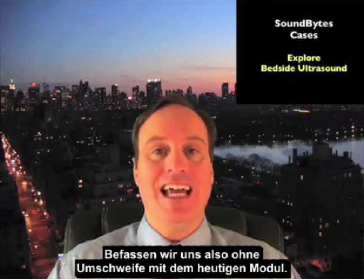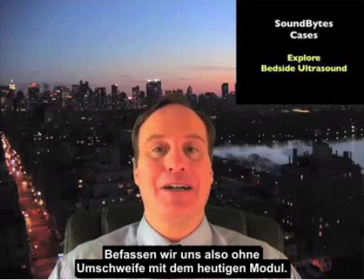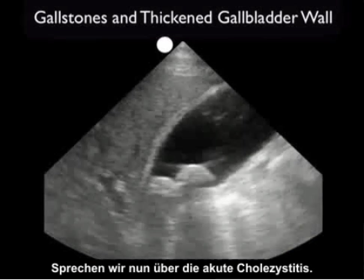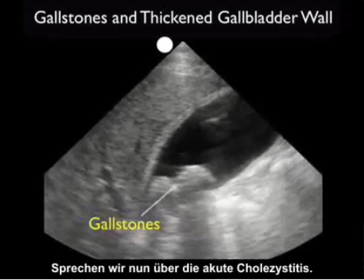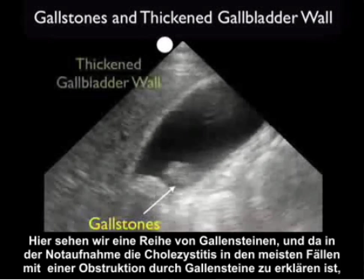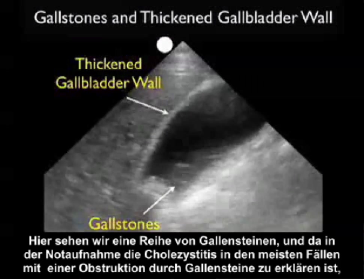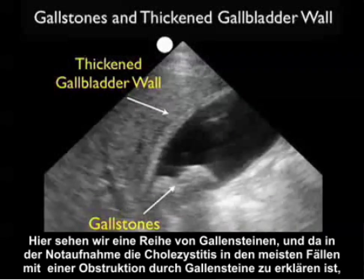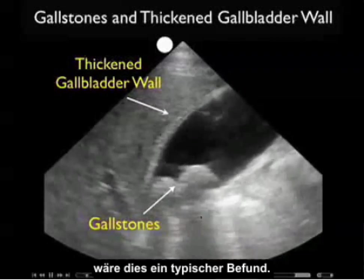So without further delay, let's get right into today's module. Let's move on to a discussion of acute cholecystitis. Here we see a number of gallstones, and as most cases of cholecystitis in the ED are calculus or gallstone related, this would be a signature finding.